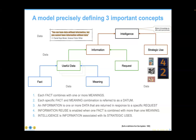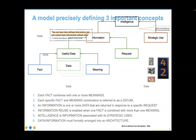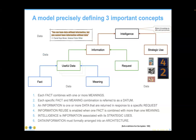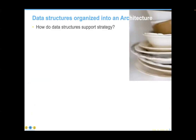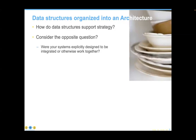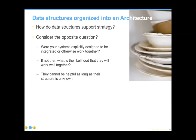These definitions have been around for a long time but are not well taught in universities, which is why they are difficult to implement. This hierarchy is itself an information architecture made up of metadata. Now let's talk about the purposefulness of data organized into architecture — how is data structure and architecture used to support strategy? The easy thing is to consider the opposite question: were your systems explicitly designed to be integrated or otherwise work together? If not, they cannot be helpful as long as their structure is unknown.